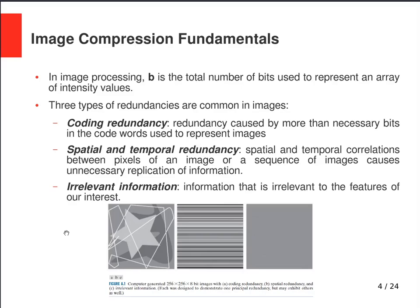There are three types of redundancies common in images. Coding redundancy is caused by using more bits than necessary in the code words used for representing images. For example, if an image only has intensity values ranging from 0 to 255 but you use 16-bit code words, you are using more than necessary bits — that is an example of coding redundancy.